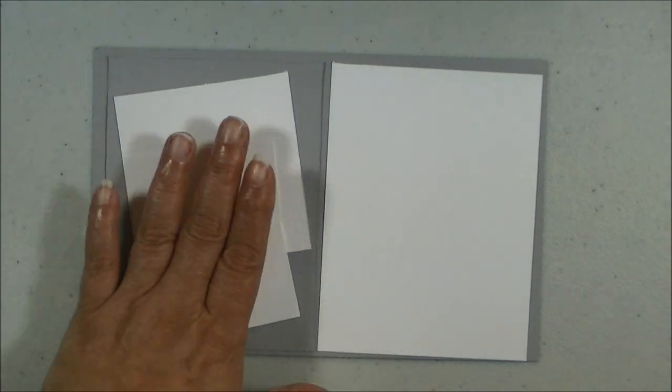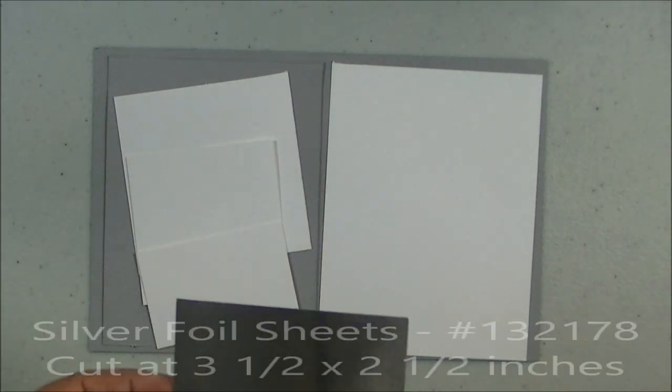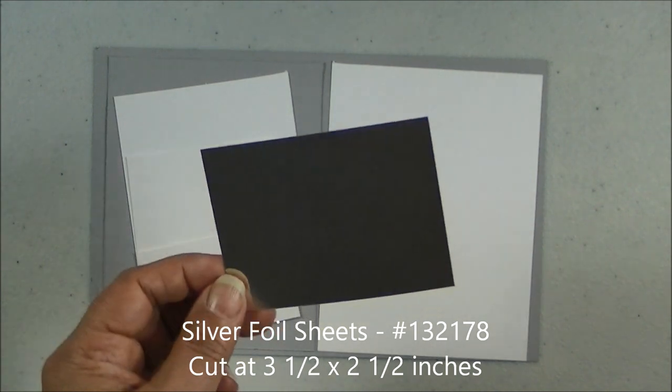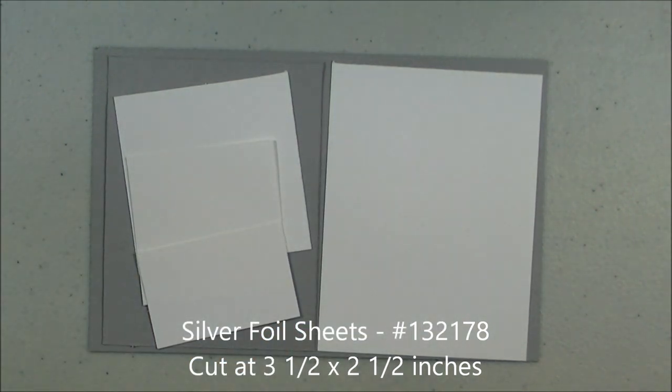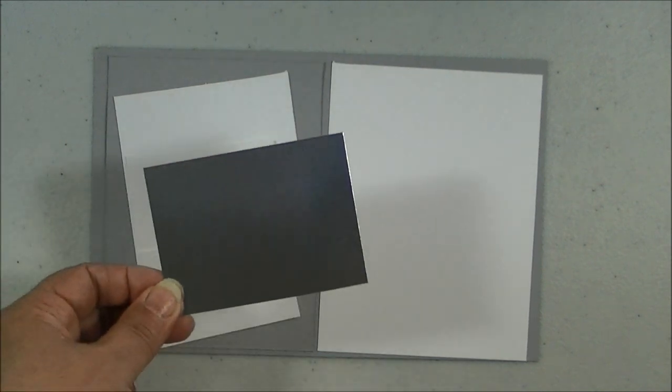Scrap pieces is what we need for this. Then I have a piece of the Silver Foil, also scrap piece. This one measures 3 1/2 by 2 1/4.